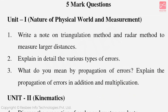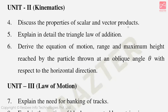Now the 5-mark section. Unit 1 Natural Physical World and Measurement: Write a note on the triangulation method and radar method to measure larger distances. Explain in detail the various types of errors. What do you mean by propagation of errors? Explain the propagation of errors in addition and multiplication. Unit 2 Kinematics: Discuss the properties of scalar and vector products. Explain in detail the triangle law of vector addition. Derive the equation of motion, range and maximum height reached by a particle thrown at an oblique angle theta with respect to the horizontal direction.